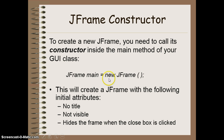This constructor will create a basic JFrame with the following initial attributes: there will be no title, the frame will not be visible until we run a method that makes it visible, and when you click the close box — the little X in the top corner — instead of exiting the program, it will simply hide the frame. We can change that with a method we'll see later on.